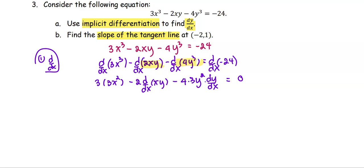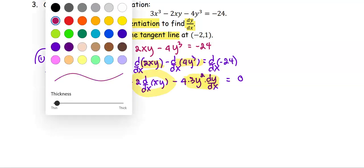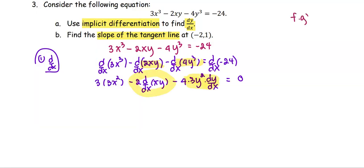We treat y as a function, which is why the chain rule applies to the third term. For the middle term, we need to apply the product rule to xy. Recall the product rule: the derivative of f times g is f times g prime plus f prime times g — the first function times the derivative of the second, plus the derivative of the first times the second function. We treat x as the first function f, and y as the second function g.